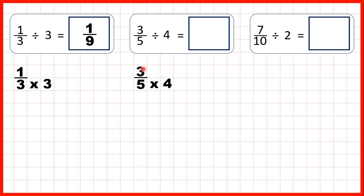So our numerator stays the same, and 5 times 4 is 20, so our answer is 3 over 20.